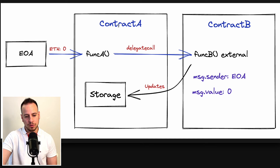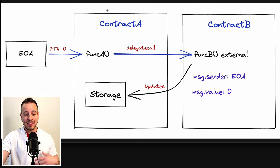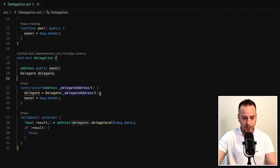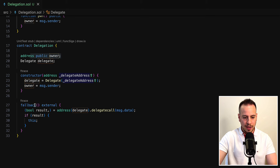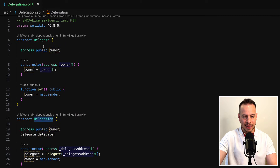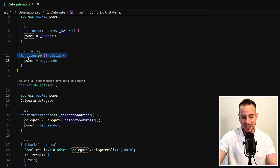It's a simple call to a function in a smart contract. Let's say that this function is executing delegate call to contract B, to function B. The thing with delegate call is that the logic of function B is going to be executed, but the state of contract A is going to be updated. For example, if we have owner here and also owner there, and we are doing delegate call from the Delegation contract to the Delegate contract and calling this pawn message.